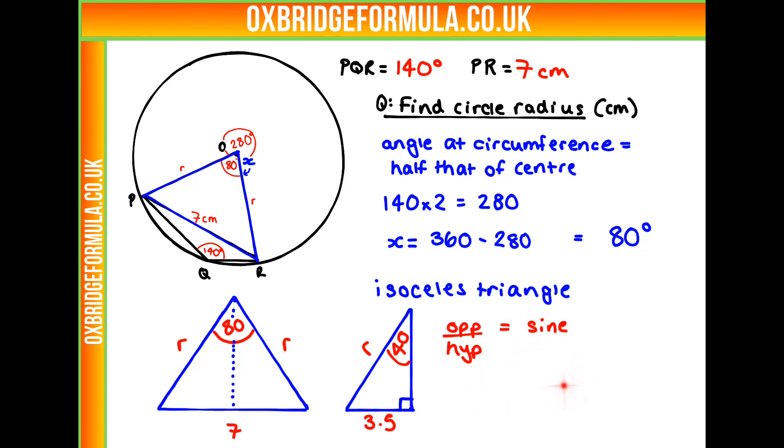That's going to be the sine. So if we do the sine of 40, that is going to equal our opposite, which is our 3.5, over our unknown length R.